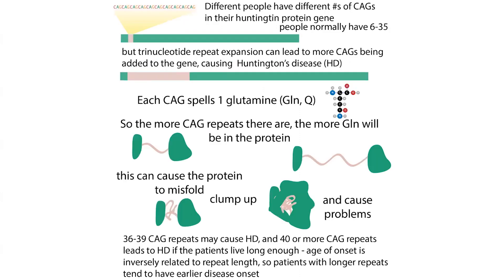An example of this is Huntington's disease. There's this codon CAG, which codes for glutamine (abbreviated GLN or Q). In Huntington's, you get an expansion of this CAG tract — a lot of CAGs in a row — so you end up with a long stretch of glutamines in a row. These are sticky amino acids that cause the protein to misfold and clump up, causing problems. This is an example of an insertion mutation, and more specifically a trinucleotide repeat expansion, because it's a single codon repeated over and over.